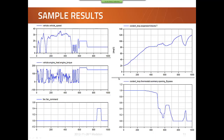Looking at some simple results, you can see the vehicle speed and engine torque for a cycle. When there is a high load at a certain speed, the cooling water temperature increases, reaching a near-boiling point. This triggers a fan command and the fan speeds up, causing a temperature decrease in the coolant. When the coolant temperature is low enough, a bypass valve opens, bypassing the radiator.